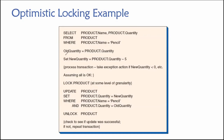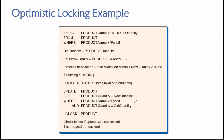Basically if we're busy doing the transaction work and somebody else changes the quantity for that product in the product table, then the condition will no longer be true and our update statement will fail. That's optimistic locking.